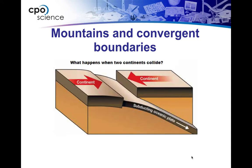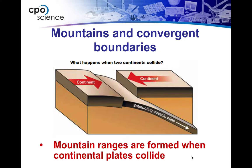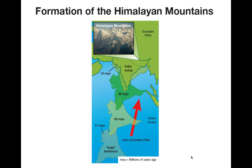What happens when two continental plates crash into each other? This is where we can get mountain ranges forming. Those two plates come together and really have nowhere to go because they have the same density, so all they do is push up. This is the reason why we have the Himalayan Mountains — the highest place on Earth. The Indian landmass from 71 million years ago kept moving up, crashing into the Eurasian plate with nowhere to go except up.